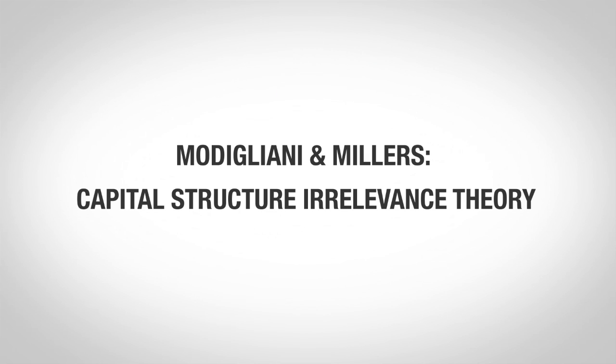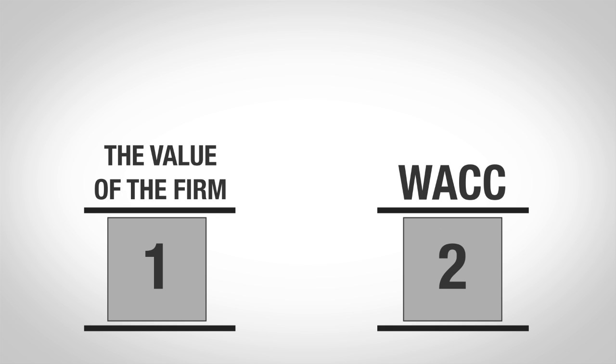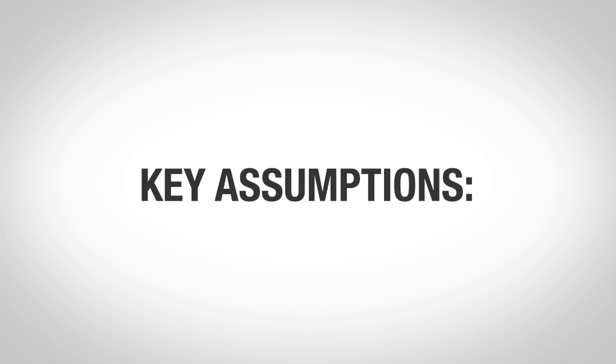Modigliani and Miller Capital Structure Irrelevance Theory has two propositions: Proposition 1 and Proposition 2. The theory is also based around some key assumptions.